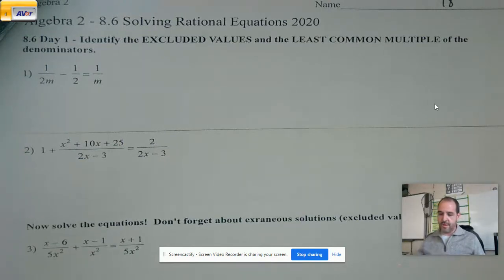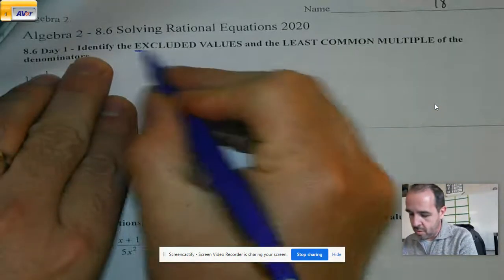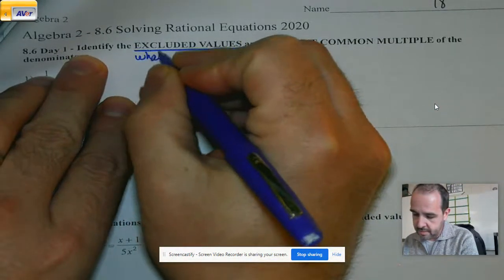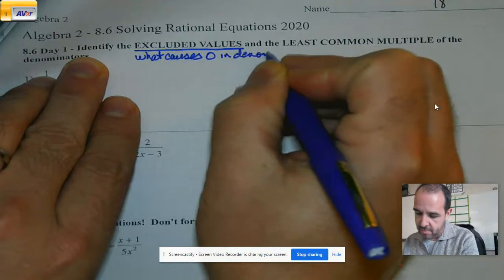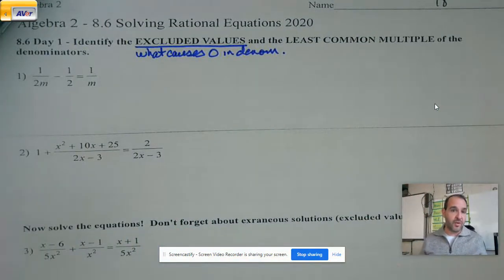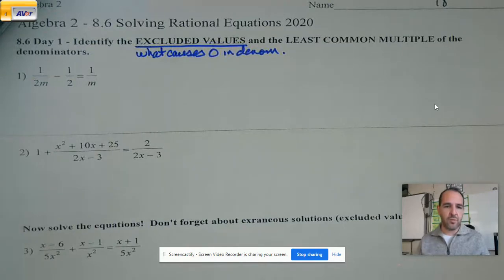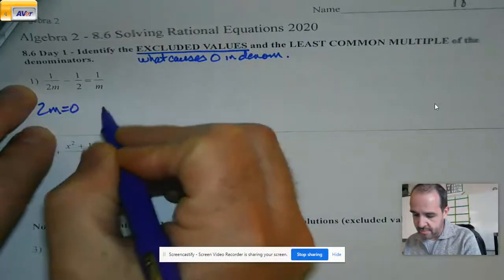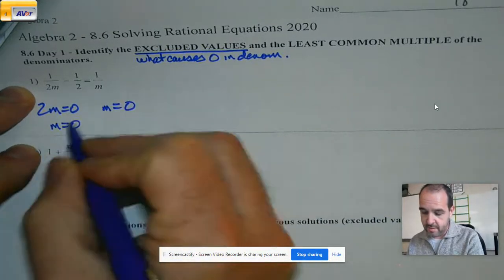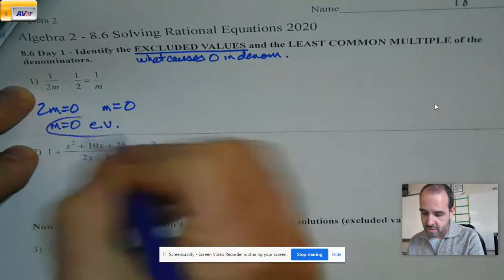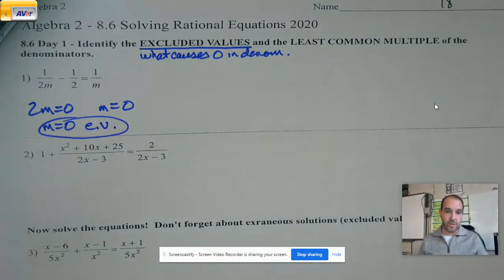We're going to identify the excluded values and the least common multiple of denominators. So reminders on a couple of things. Excluded values - what causes zero in the denominator? That would be an excluded value because we cannot divide by zero. So I look at this and whether I set 2m equal to zero or m equal to zero, I'm going to get the same thing. So I have one excluded value here. I can't plug zero in for m because it's going to cause a problem. That's done.